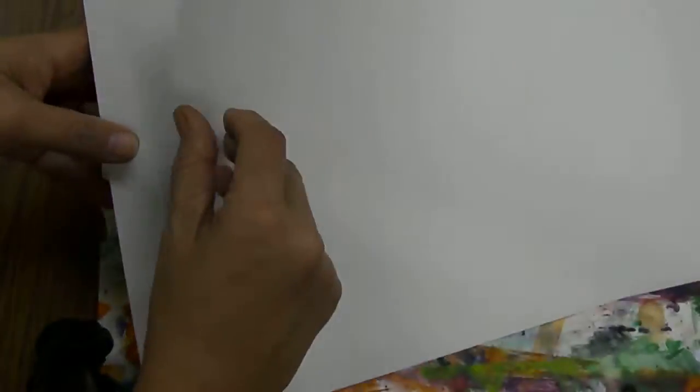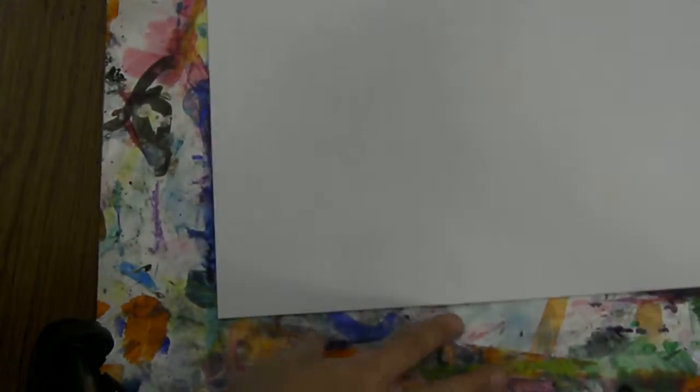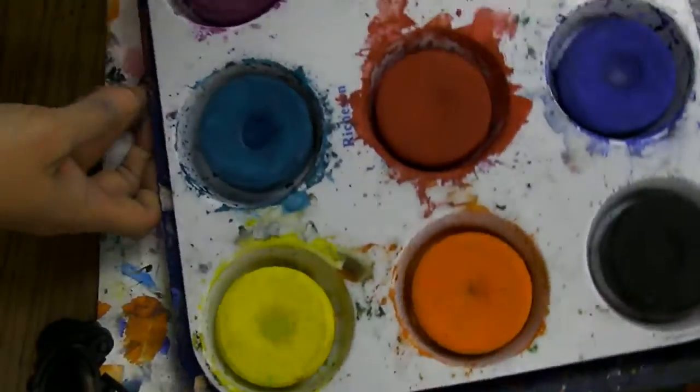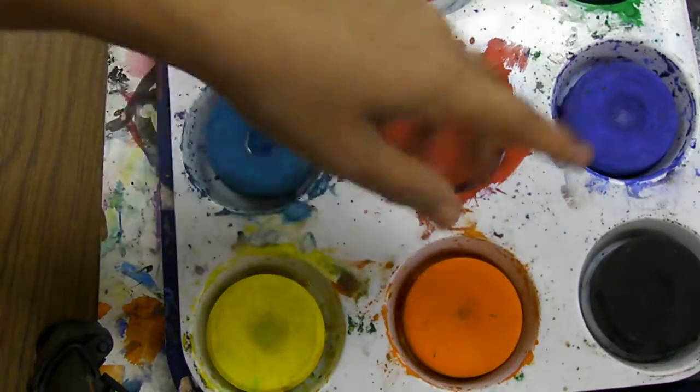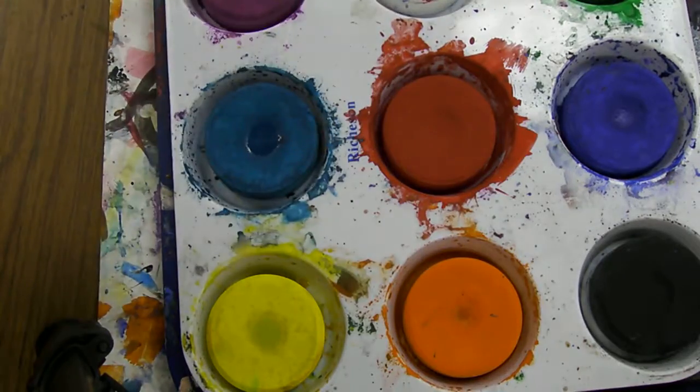We're going to do some painting today. You're going to get two sheets of paper. However, you need to make sure you write your names on the backs, because these are going to be used again. Write your name, your grade, and your group letter. The first one we're going to do is your analogous sets of colors. We're using this set of paints here—these are the new sets that we have.